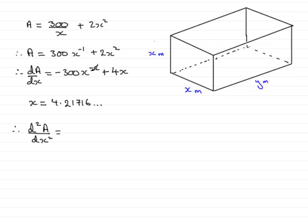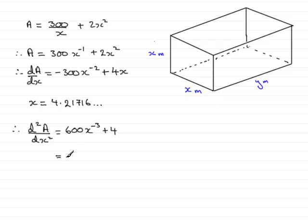Differentiating the first term, minus 2 times minus 300 gives plus 600. Reduce the power by 1, so that's x to the minus 3. Then differentiating 4x with respect to x gives simply 4. Cleaning this up, we write x to the minus 3 as 1 over x cubed, giving us 600 over x cubed, plus 4.